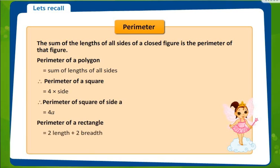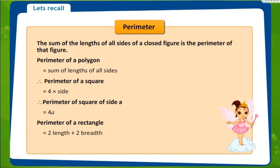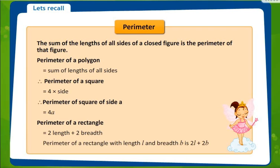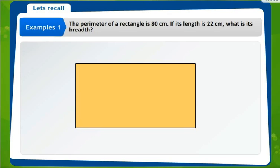Perimeter of a rectangle. As we know, a rectangle has opposite sides equal, so it has two lengths and two breadths. Since perimeter is the sum of the lengths of all sides of a closed figure, the perimeter of a rectangle will be 2 times length plus 2 times breadth. So the perimeter of a rectangle with length l and breadth b can be written as 2l plus 2b, where small l is the length and small b is the breadth of the rectangle.